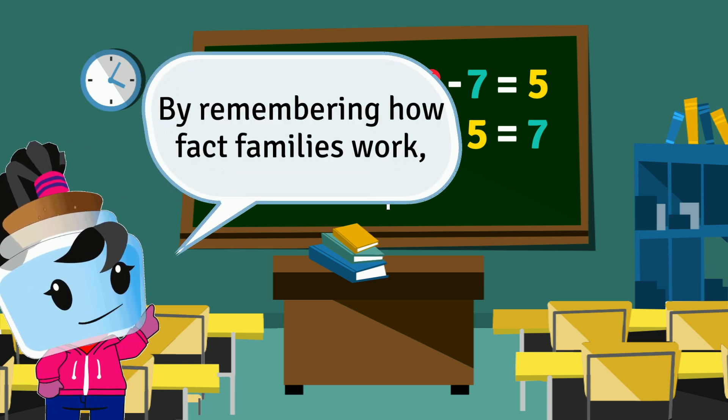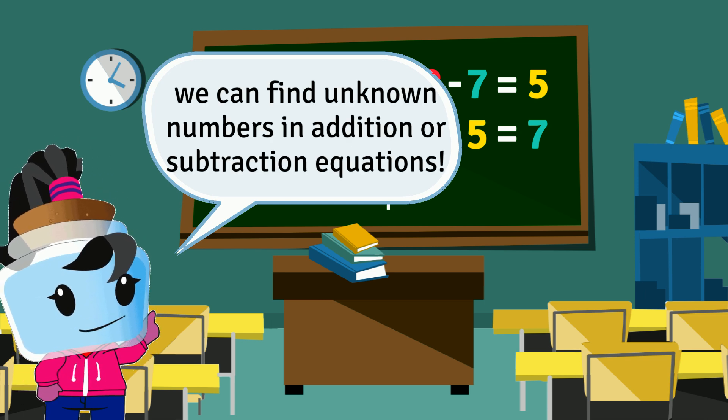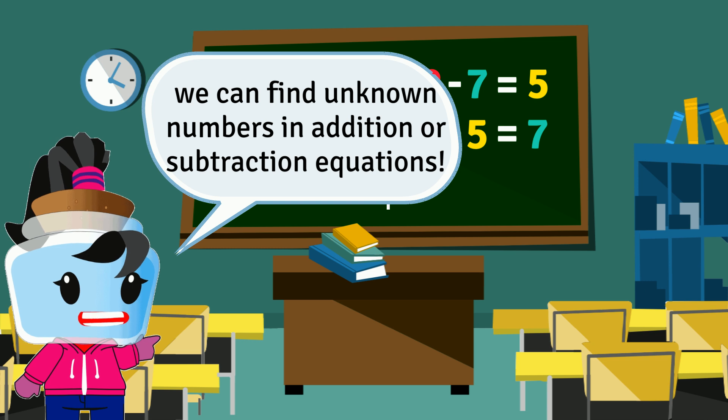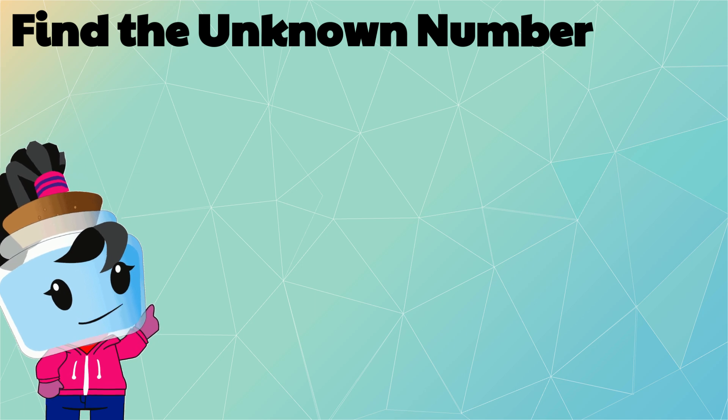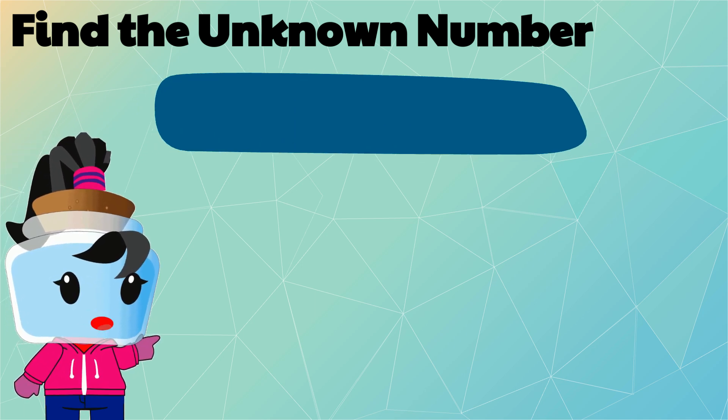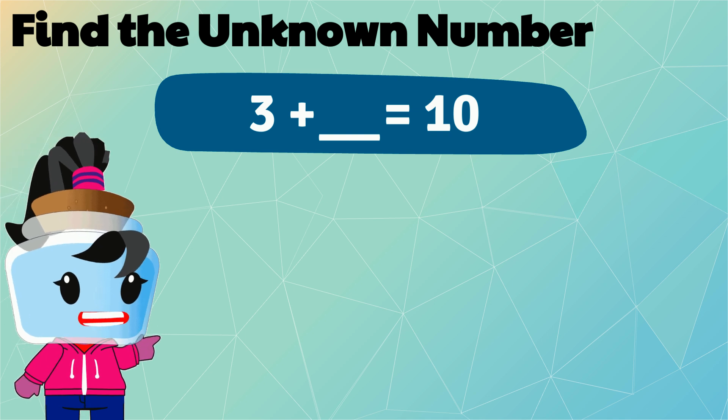By remembering how fact families work, we can find unknown numbers in an addition or subtraction equation. Let's practice with an addition equation first: 3 plus what unknown number equals 10?